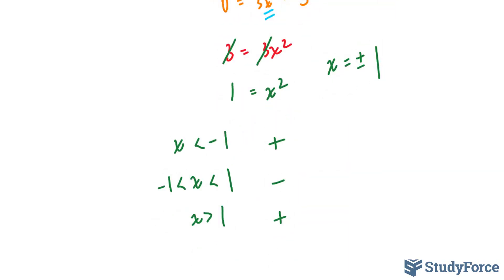So when we evaluated the derivative at a point that was less than negative 1, the slope of the tangent at that specific point, in our case it was negative 2 here, that slope was positive. So it was going upwards.